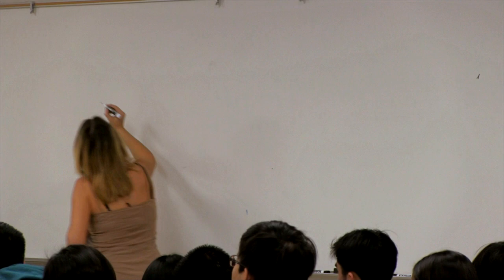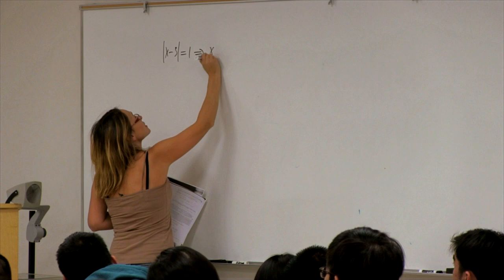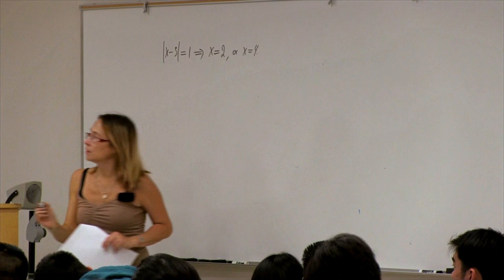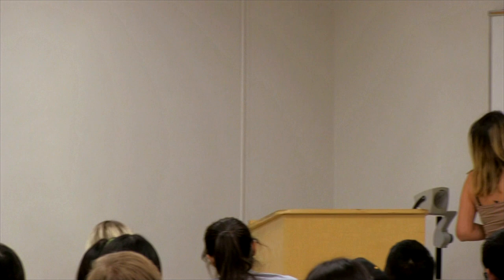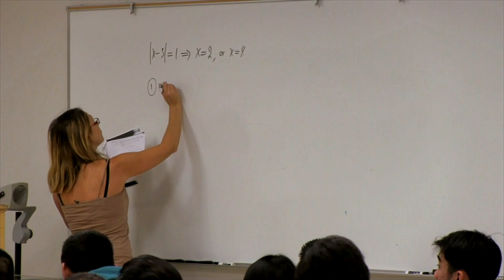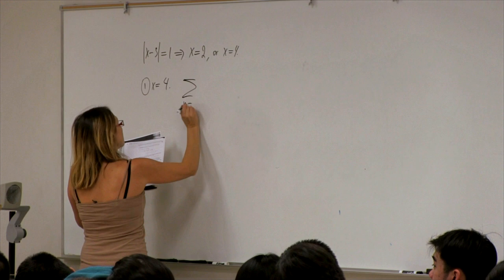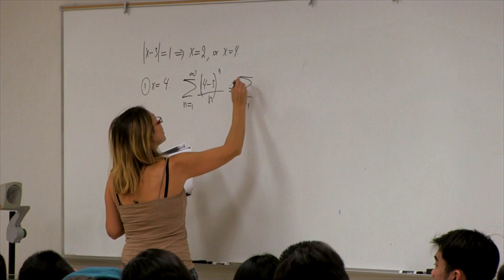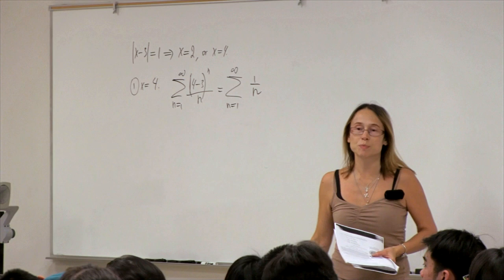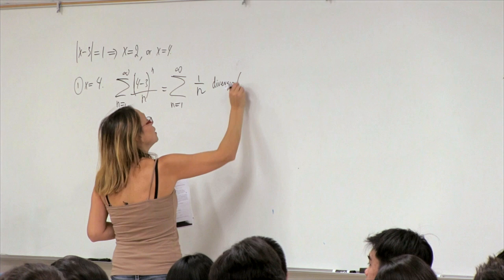When |x−3| equals 1, x is either equal to 2 or x equals 4 — the borders of the interval. Let's check x equals 4 first: we get the series (4−3)^n / n, which simplifies to 1/n. That diverges because this is the harmonic series.